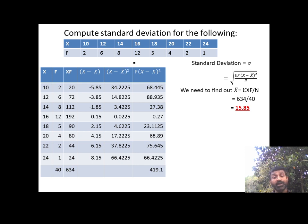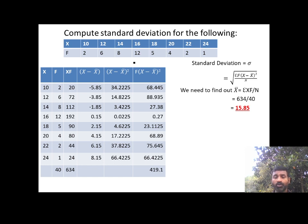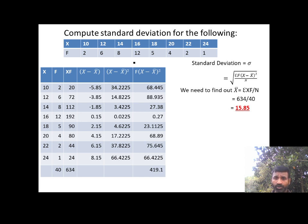Now we need (x minus x-bar) whole square. For each (x−x̄) value — −5.85, −3.85, −1.85, etc. — we square them. Minus times minus becomes plus. So we get 5.85²=34.2225, 3.85²=14.8225, 1.85²=3.4225. Then we multiply each by the corresponding frequency. 34.2225×2=68.445, 14.8225×6=88.935, 3.4225×8=27.38. And 0.0225×12=0.27.